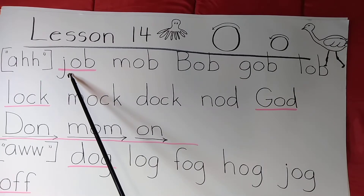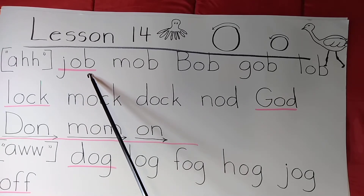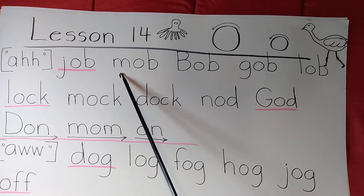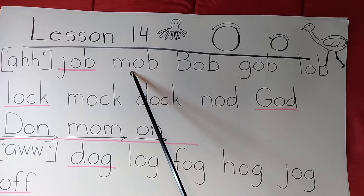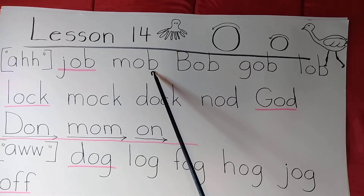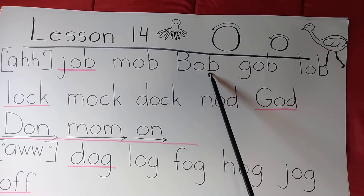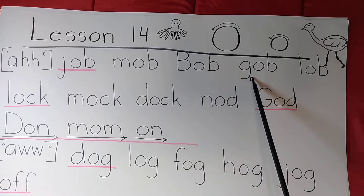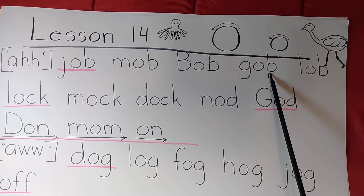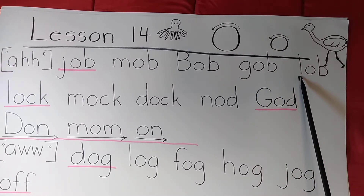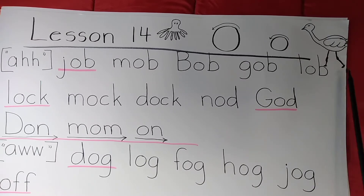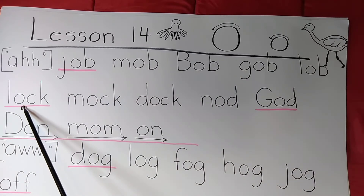Here we go, students. J-O-B — job. M-O-B — mob. B-O-B — bob. G-O-B — gob. L-O-B — lob. And the next three words rhyme.